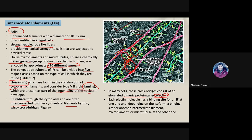These green cross-bridges are referred to as plectins, which are dimeric proteins made up of two subunits. Plectin has two ends: one end is in contact with the intermediate filament, and the other end can be in contact with the microtubule or the microfilament. So intermediate filaments are thinner than microtubules and are connected with other cytoskeletal elements via plectins.